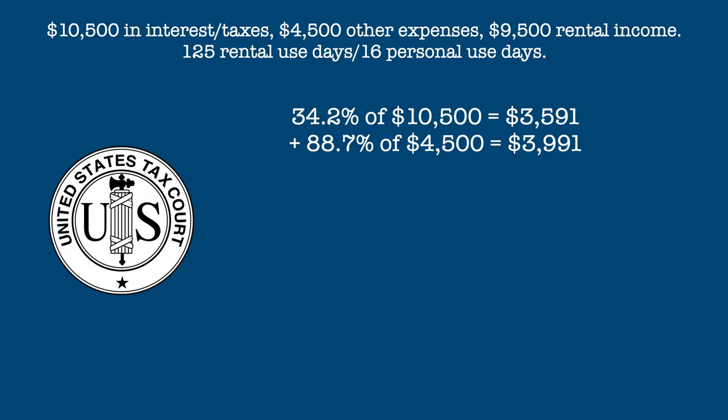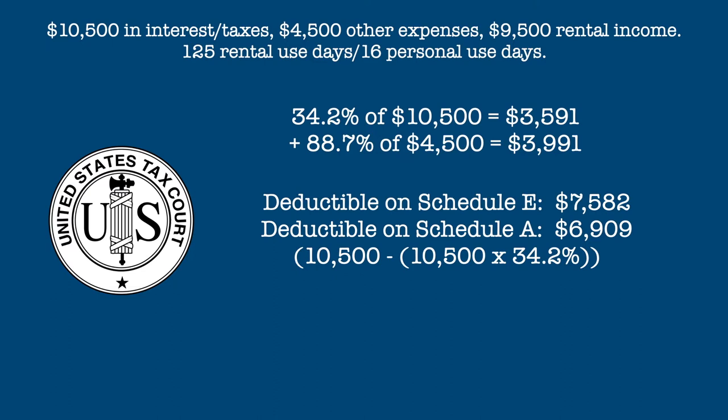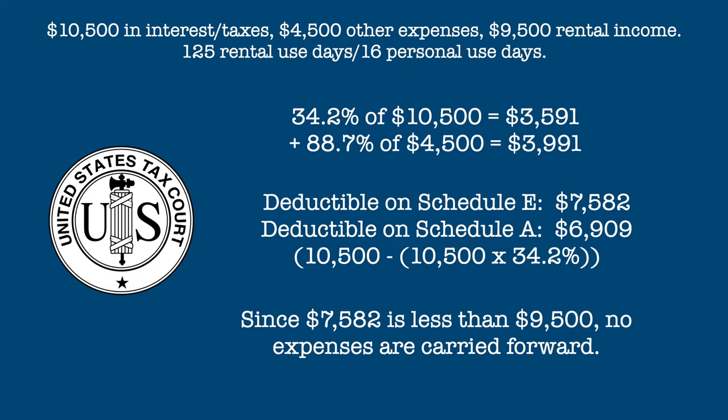Using the tax court method, 34.2% of the interest and taxes, or $3,591, plus 88.7% of the other expenses, or $3,991, would be deductible on the Schedule E, and the remaining $6,909 in interest and taxes would be deductible on Schedule A. Since the total expenses deducted on the Schedule E would be $7,582, which is less than the rental income, no expenses would need to be carried into a future year, which simplifies record keeping and eliminates any chance the expenses would be lost if the property were to be sold.